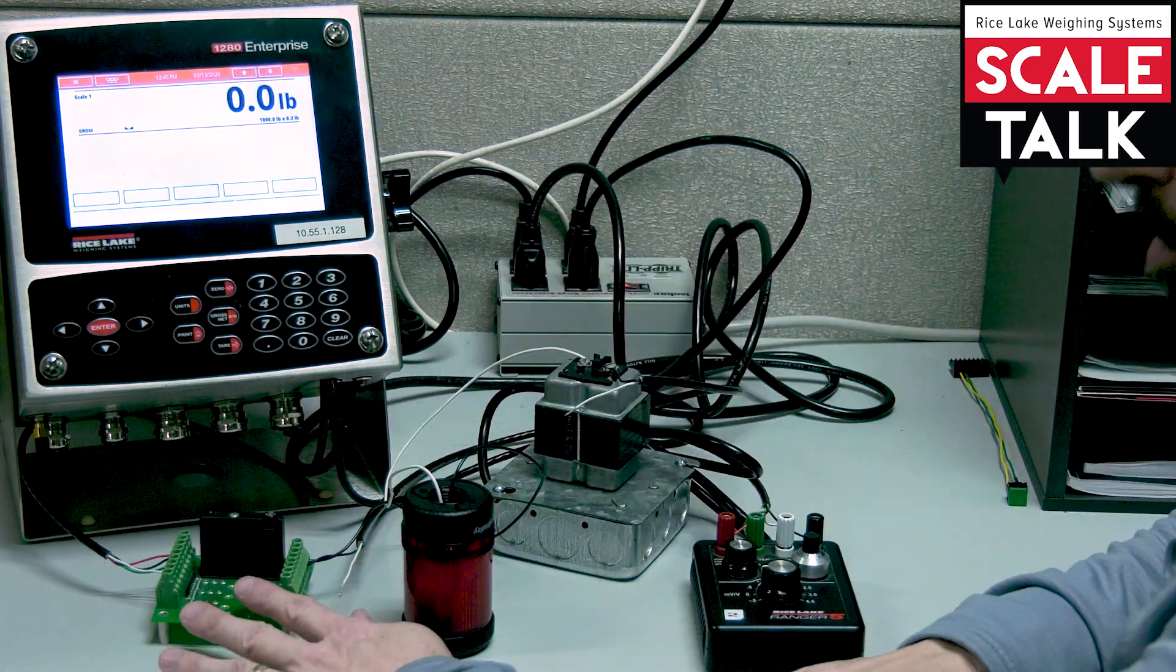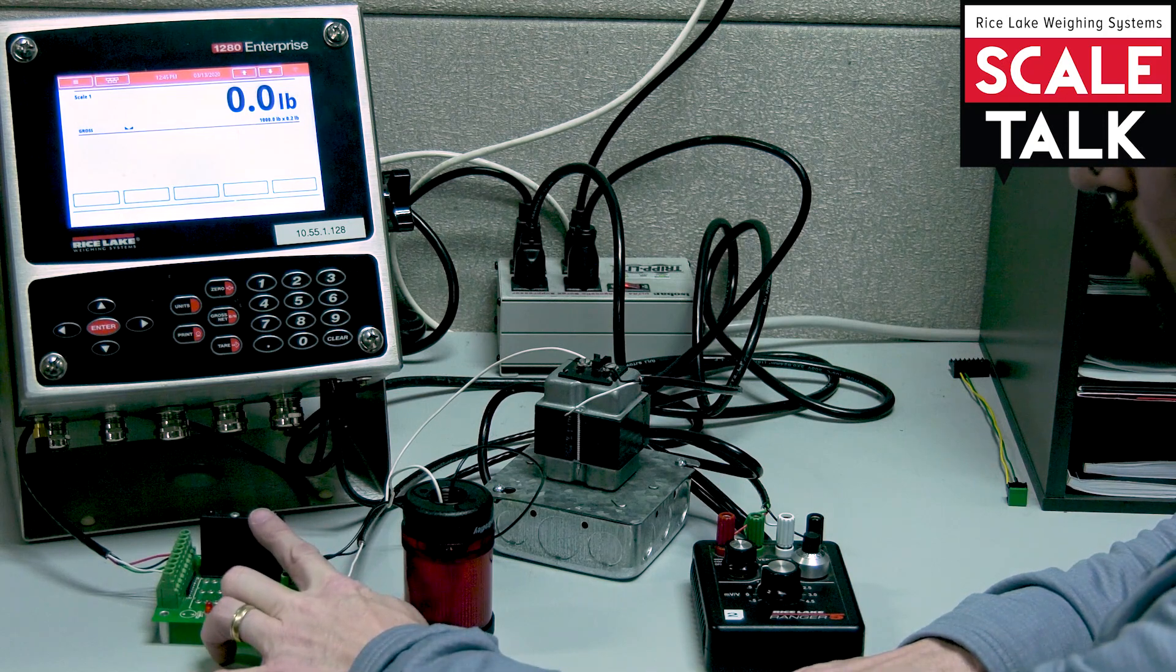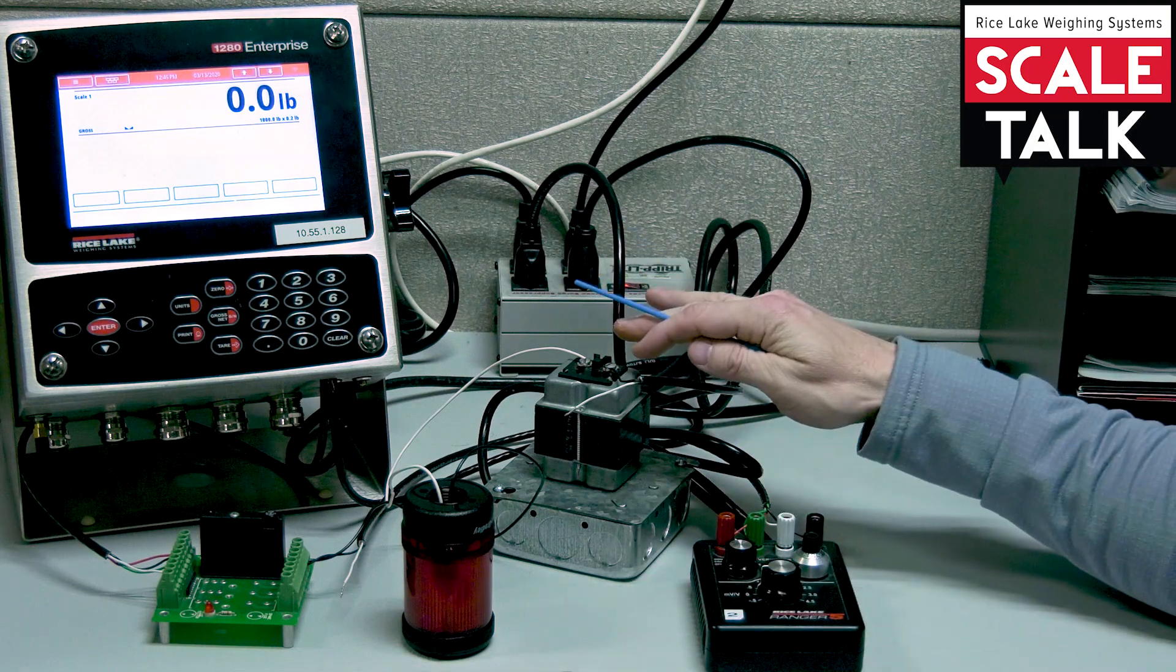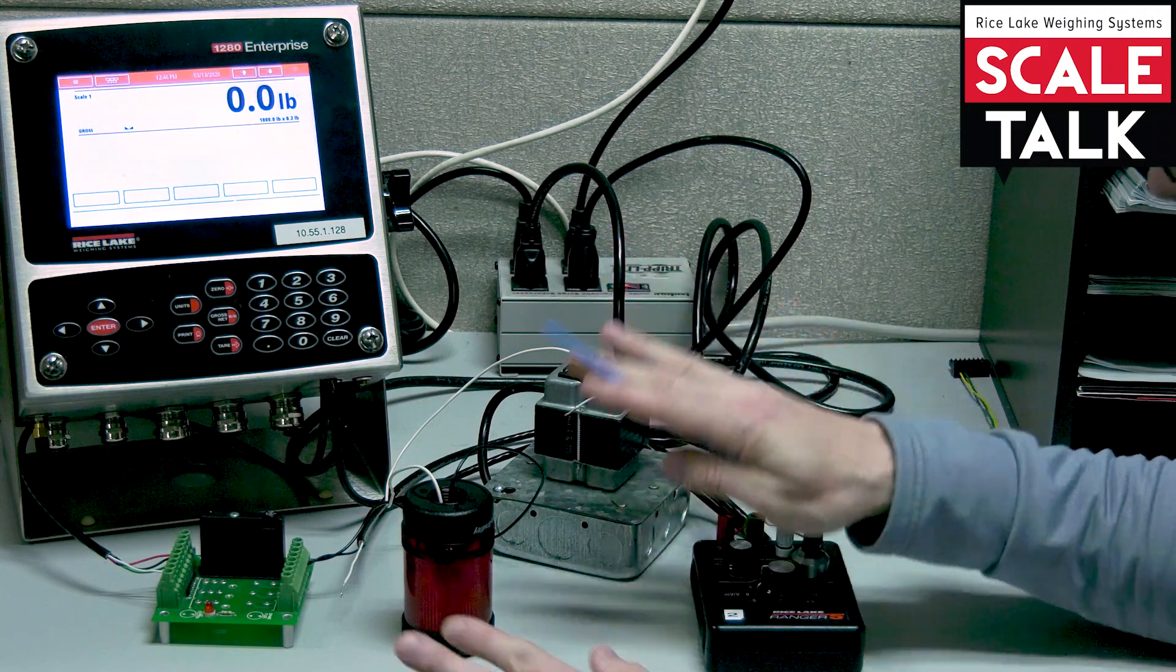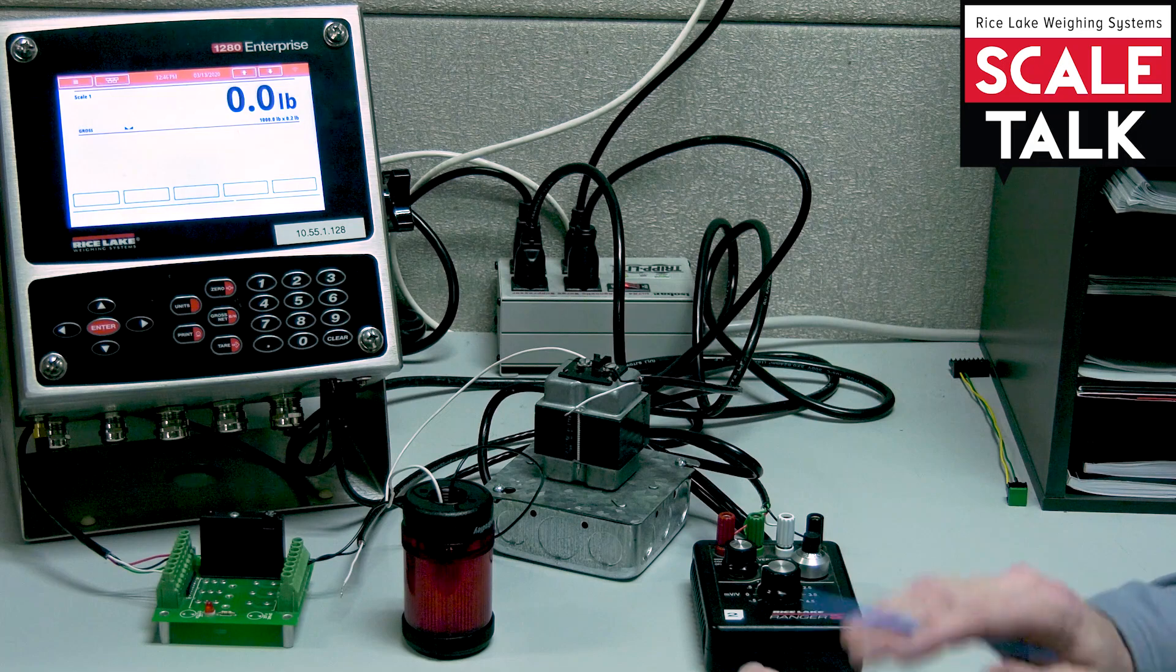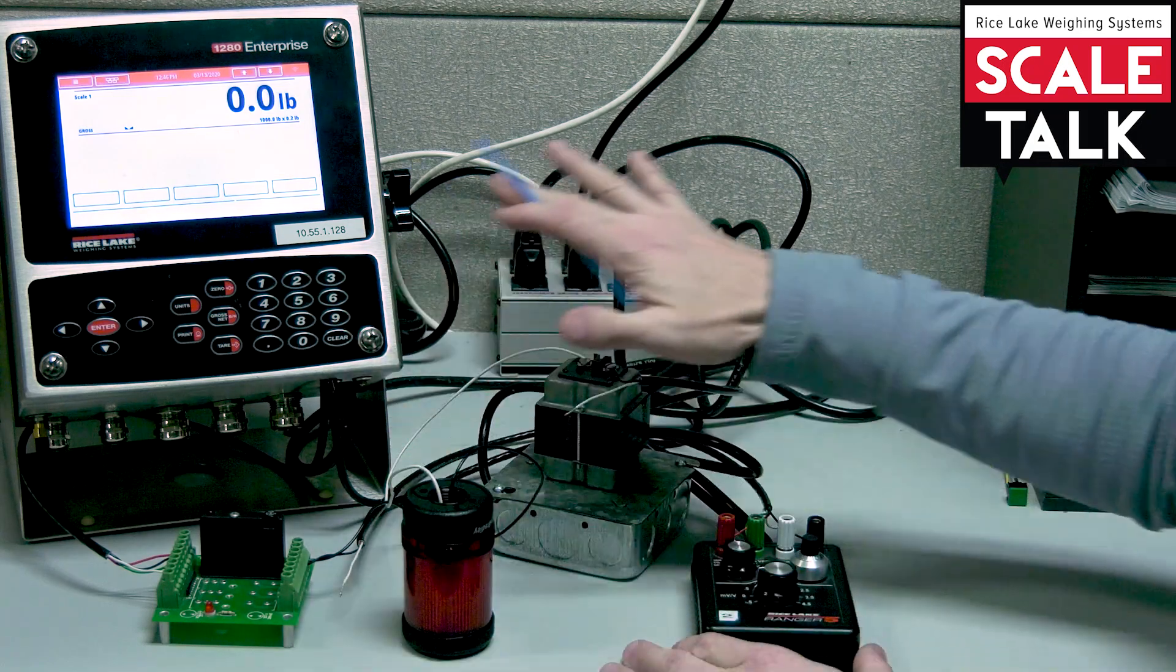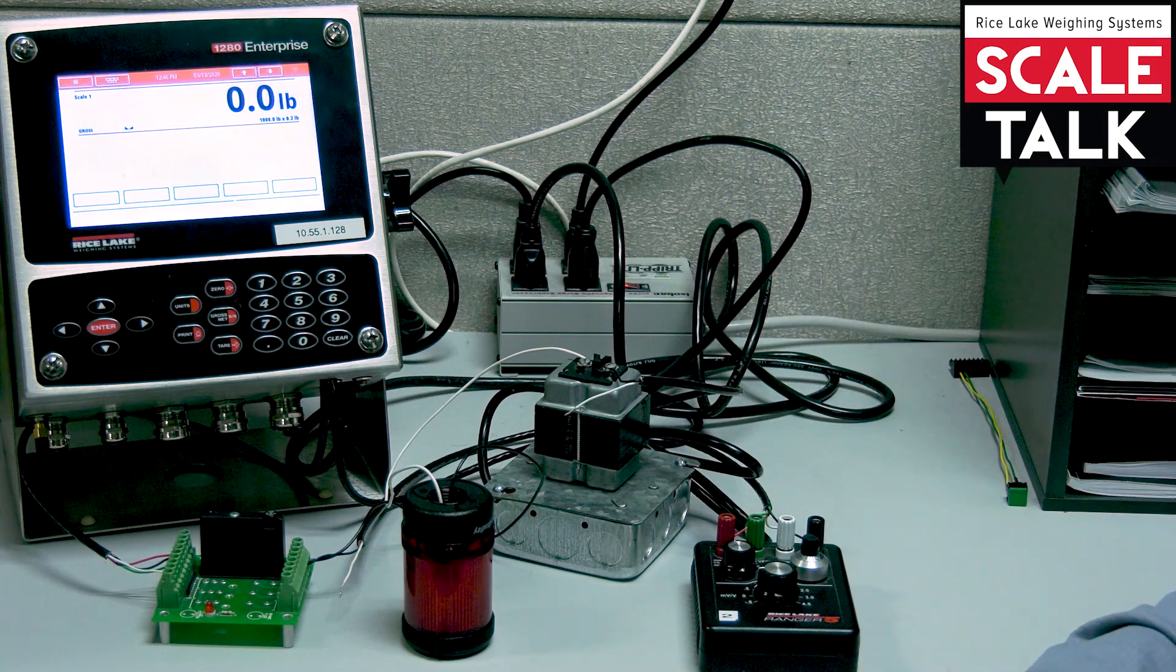I've got a relay rack with a single solid state relay in place. I've got a red light here that's connected to a power supply providing 24 volts DC to this light so it can come on. Our simulator is here and I've already got everything wired up, so we're going to take a look at the free running set point first.